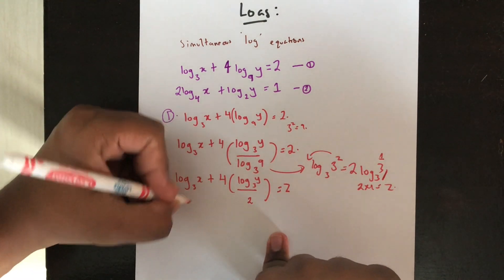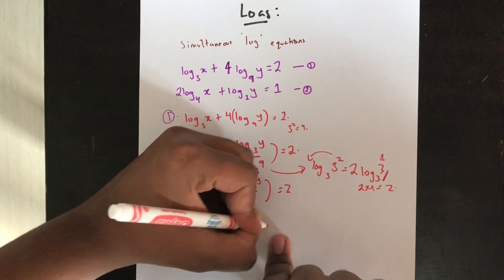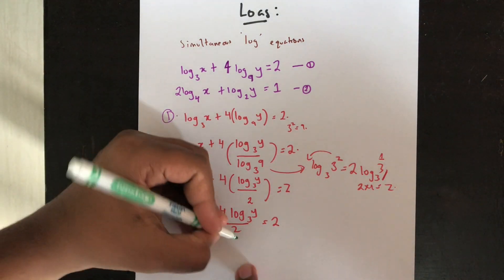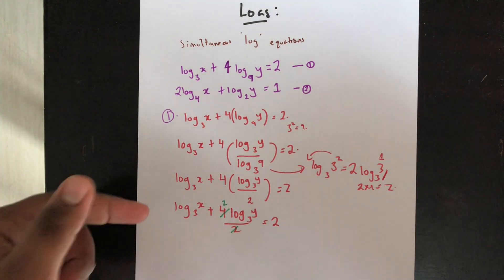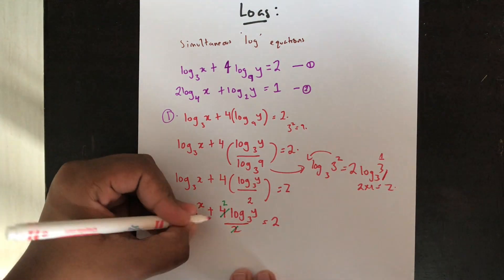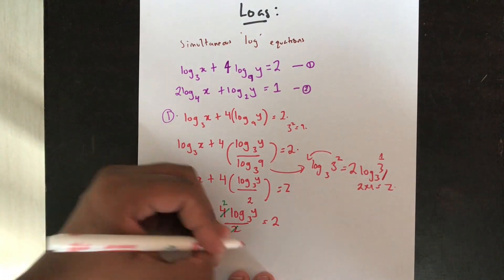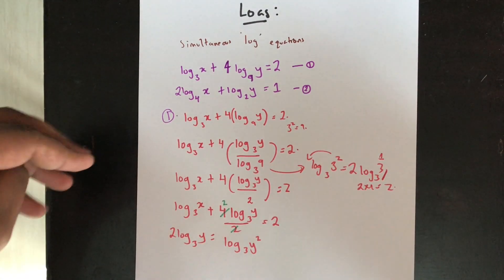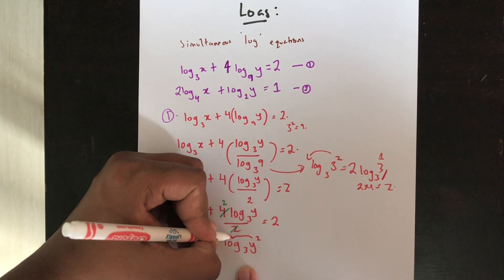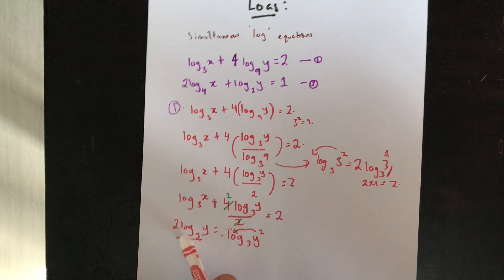Substituting back, the 4 divided by 2 simplifies, leaving log x base 3 plus 2 log y base 3 equals 2. Now, 2 log y base 3 is the same as log y² base 3 by the power rule of logarithms — moving the 2 up as an exponent. So these two forms are equivalent and interchangeable.